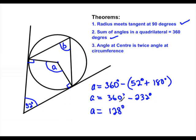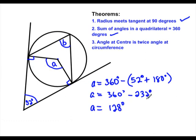Which gives us 128 degrees. Okay, so angle A is equal to 128 degrees. So what's the reason?